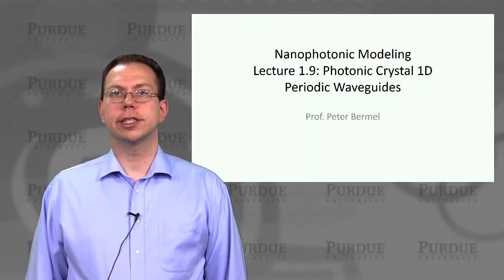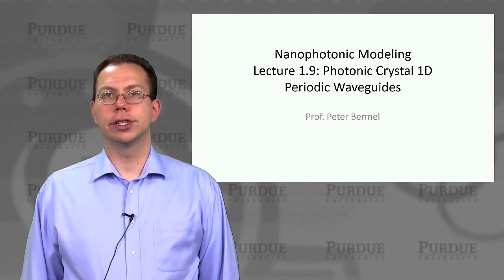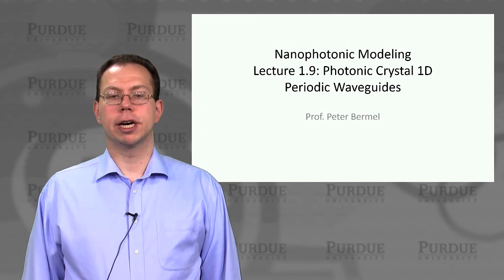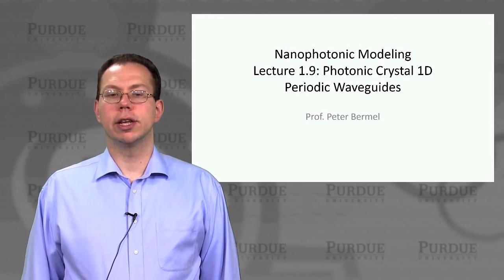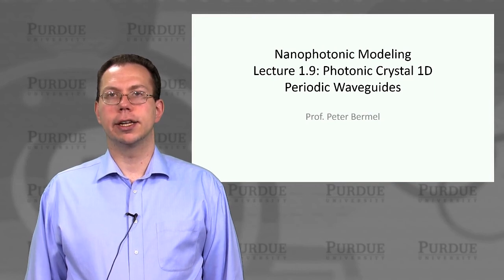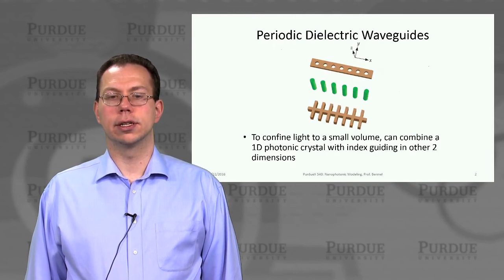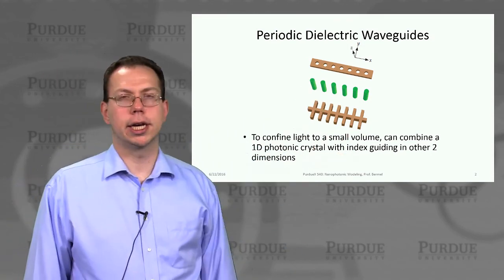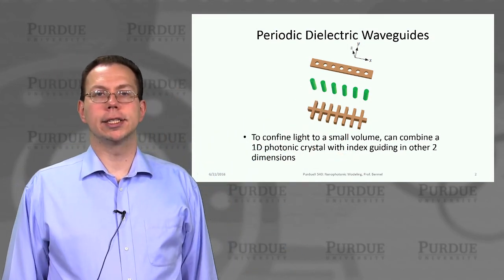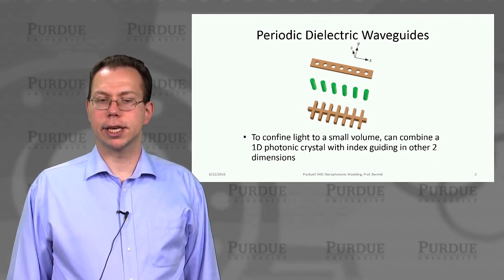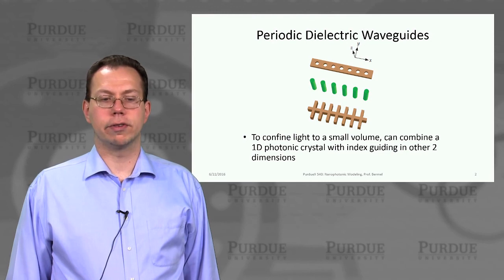So we were just discussing what happens when you introduce defects into photonic structures, and now we're going to talk about creating 1D periodic waveguides, which are actually a hybrid between index guided and photonic crystal designs. And so here are three examples, certainly not the only possible designs, but just giving you a good cross section of what has been done previously of periodic dielectric waveguides.